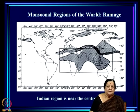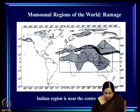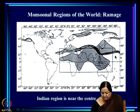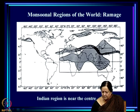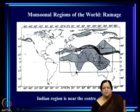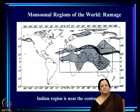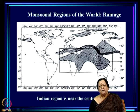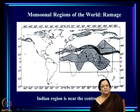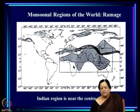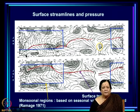These are the monsoonal regions of the world delineated by Ramage using these criteria. He suggests a box which delimits the monsoonal regions of the world. Notice that India is very much at the center, and according to Ramage, monsoonal regions comprise primarily Africa, Asia, and part of the West Pacific.